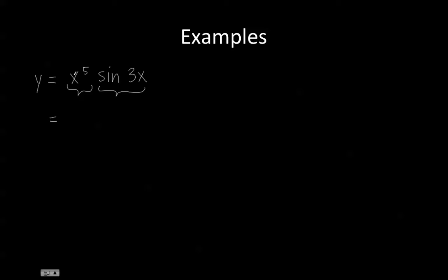Using the product rule, let's take the derivative of the first factor, which is equal to 5x to the power of 4, and multiply that by the second factor. Next we add the derivative of the second factor.